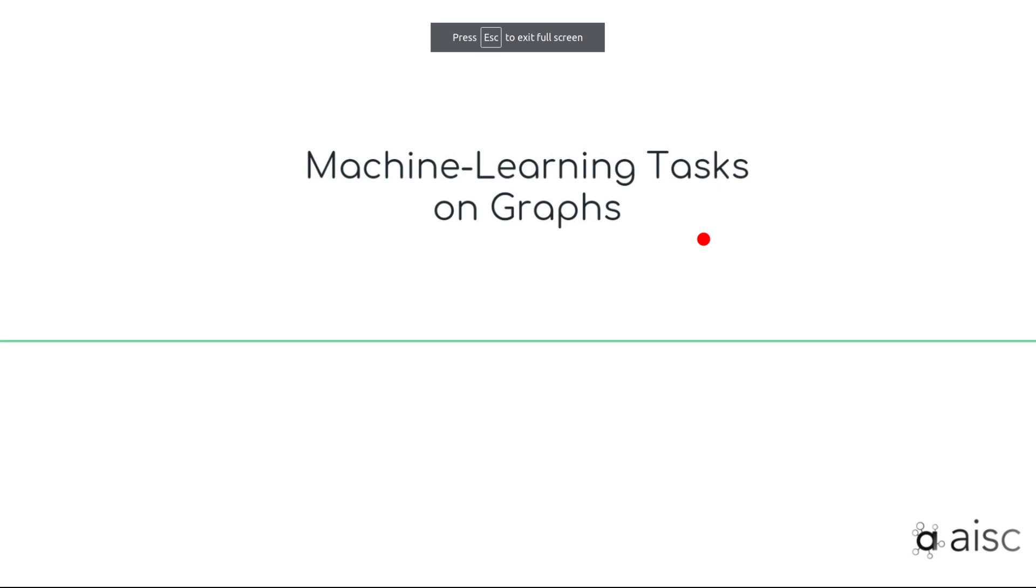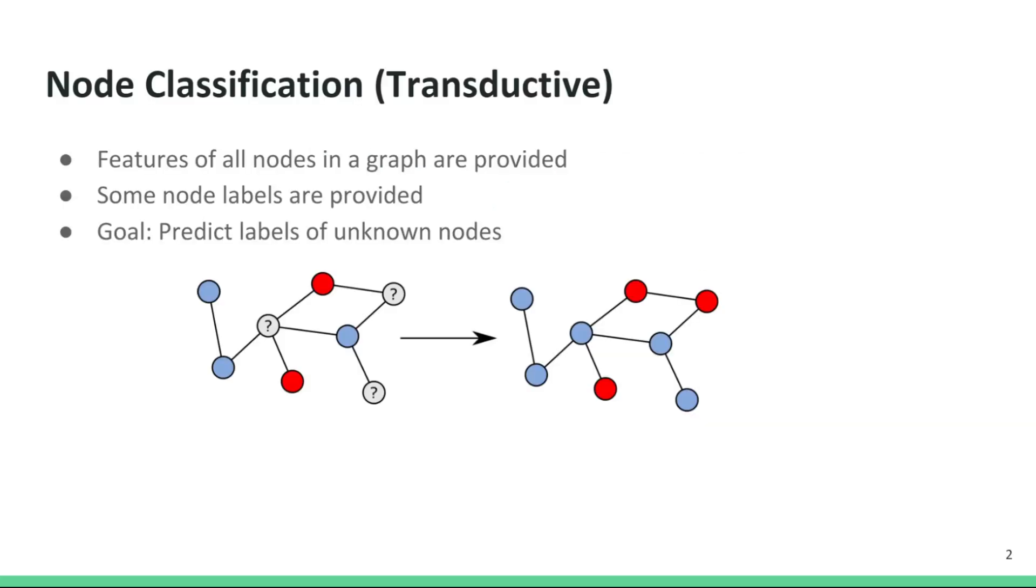Let's talk about the various machine learning tasks that can be accomplished on graph representations of data. A common task is labeling nodes of a graph.